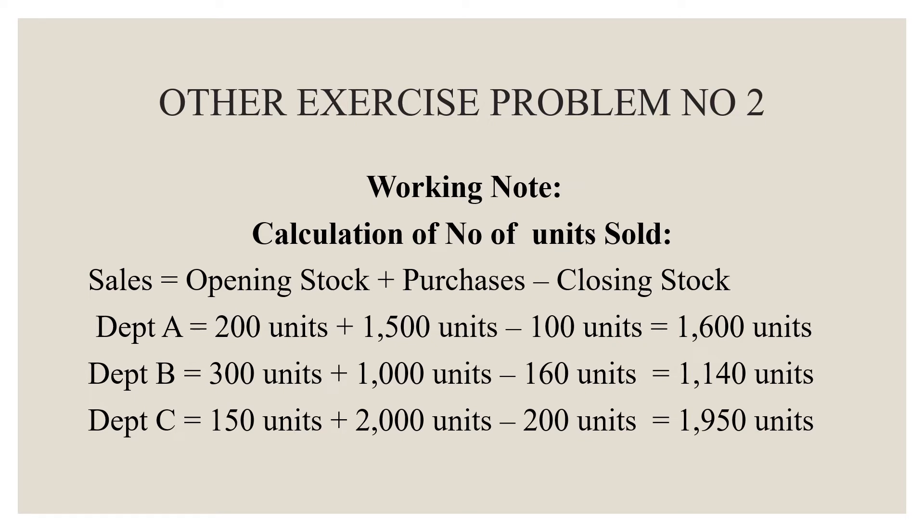Department A: 200 units plus 1500 units minus 100 units — Sales Unit is 1600 units for Department A. Department B: 300 units plus 1000 units minus 160 units equals 1140 units. Department C: 150 units plus 2000 units minus 200 units equals 1950 units.